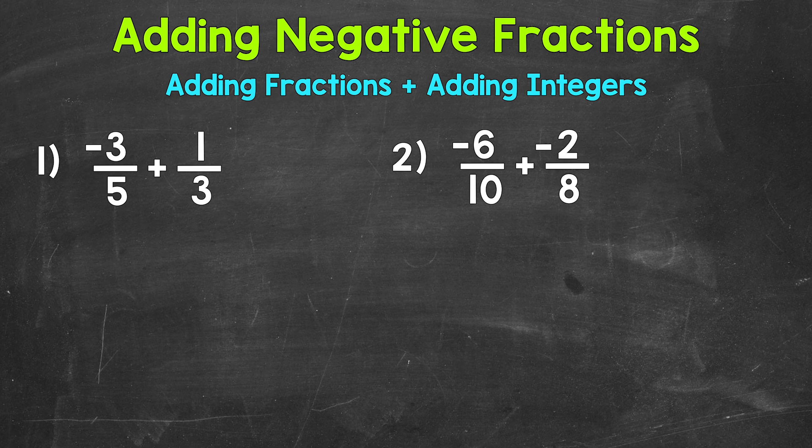Let's jump into number one, where we have negative three fifths plus one third. The first thing we need to do when adding fractions is find a common denominator — we have a five and a three, so we need to find the least common multiple between those two denominators. That's going to be our least common denominator.